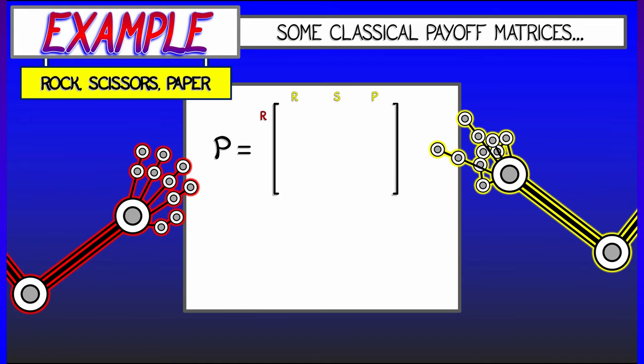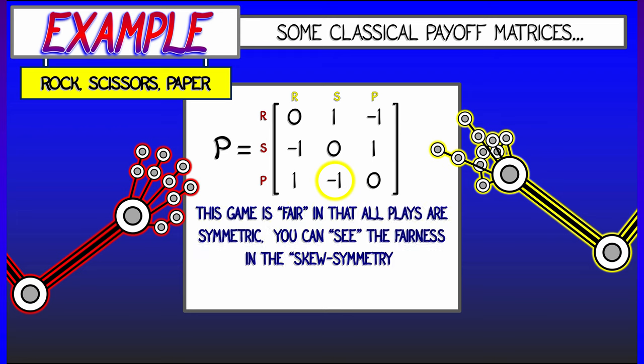Hopefully you've seen that game before. Rock beats Scissors, Scissors beats Paper, Paper beats Rock. You should check to see that the payout matrix is this, using only 0, 1, and negative 1 for draw, win, and lose.